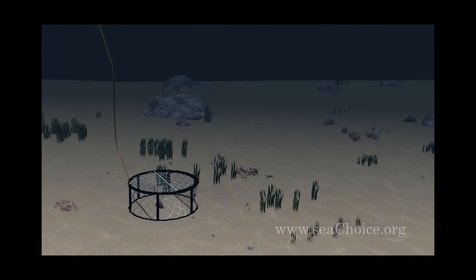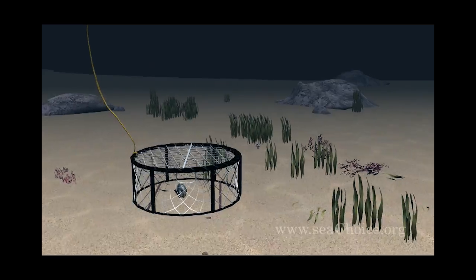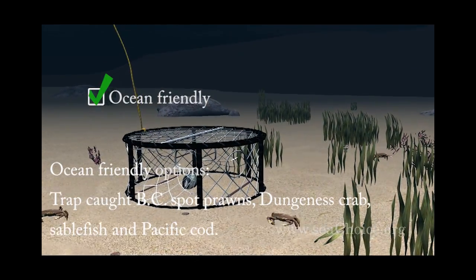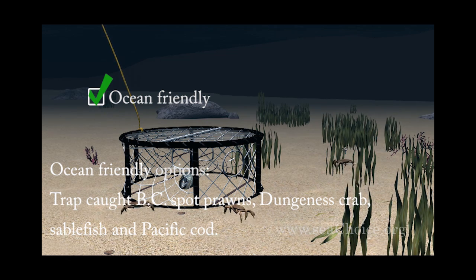Pots and traps can potentially cause some habitat damage depending on the size and type of the trap or pot, where it's placed, and how densely they're set. Pots and traps are generally recognized as being less damaging than bottom trawls.